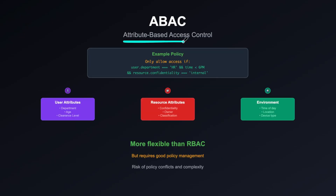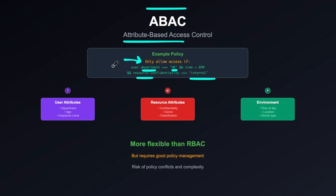The next model is attribute-based access control, or ABAC. This goes beyond roles — it uses user attributes, resource attributes, and environment conditions to define access. For example, a policy might allow access only when the user's department is set to HR and the resource attribute equals internal. Only when those conditions are met do you grant read or write access. This can also be combined with role-based authorization, checking attributes in your database to either allow or deny access.